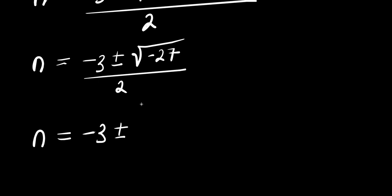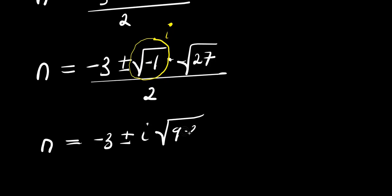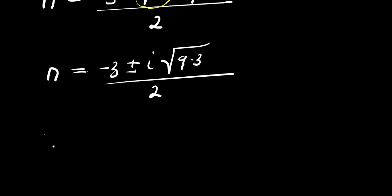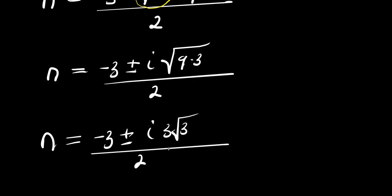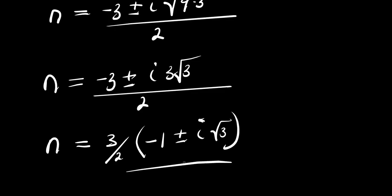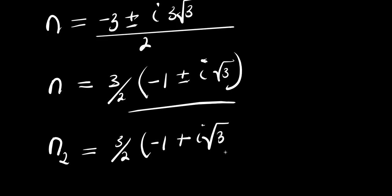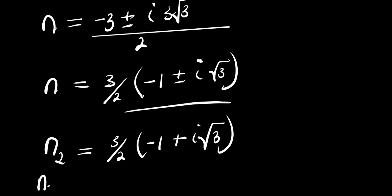So n equals negative 3 plus or minus square root of negative 27, divided by 2. Since we have a negative under the radical, we write it as square root of 9 times 3, giving i times 3√3. So the two complex values are: n₂ equals negative 3 over 2 times negative 1 plus i√3, and n₃ equals negative 3 over 2 times negative 1 minus i√3.